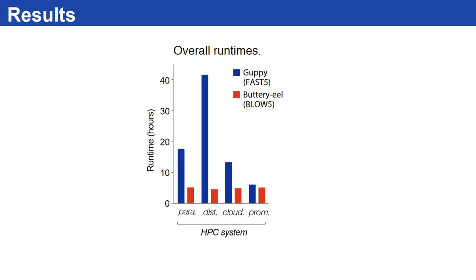This is a base calling benchmark done using SLOW5 input and FAST5 input on four different systems. Each system had a different storage system. We chose high performance computers, one with a parallel file system and a Lustre distributed file system. Then we have an AWS cloud instance and a nanopore DNA sequencer itself that comes with SSD storage. On all systems, SLOW5 base calling recorded very small, consistent run times. However, due to the complex structure of FAST5, the run times varied a lot on different systems and were always bigger than SLOW5 run times.